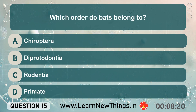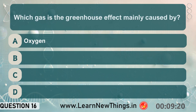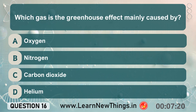Which order do bats belong to? Chiroptera. Which gas is the greenhouse effect mainly caused by? Carbon dioxide.